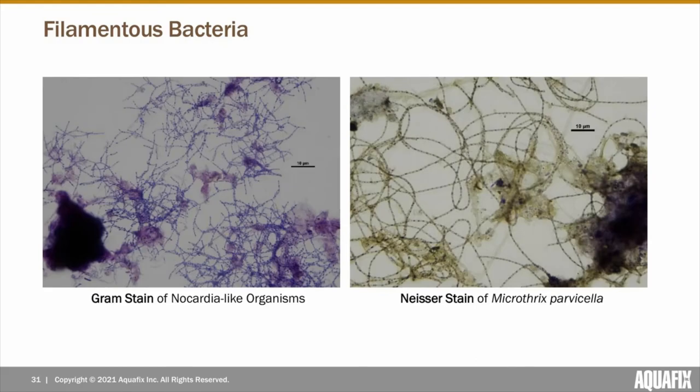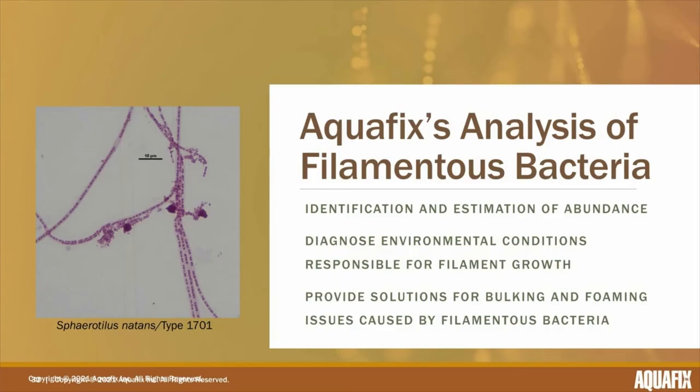We utilize Gram and Neisser stains to definitively identify filaments based on their unique staining properties. For example, one filament stains Neisser negative but has Neisser positive granules — characteristics consistent with Microthrix parvicella. Another photo shows a Gram-positive filament with true branching, consistent with Nocardia-like organisms. After filament identification and estimation of abundance, we're able to determine the environmental conditions responsible for their growth and the solution to the problems these filaments could be causing.